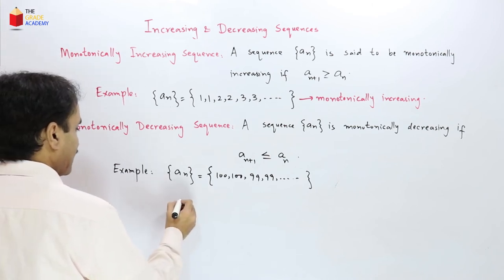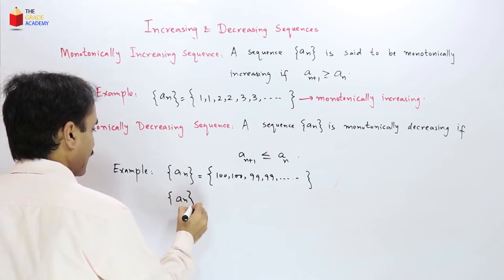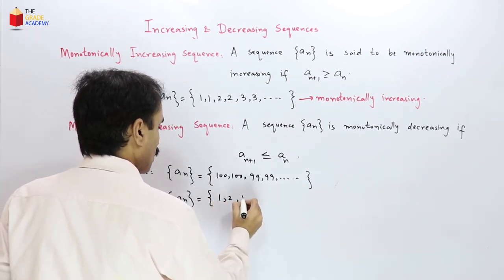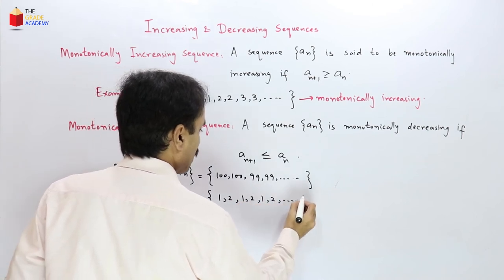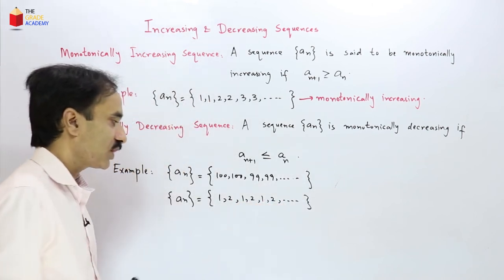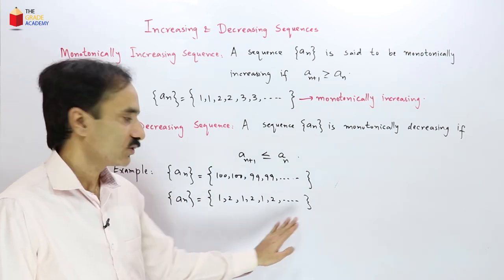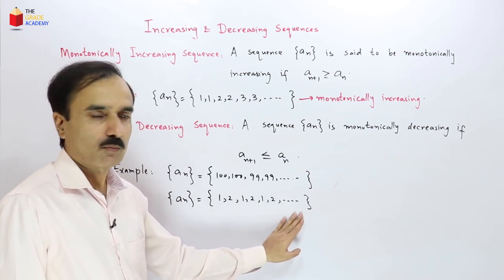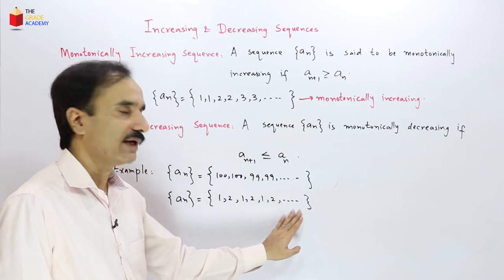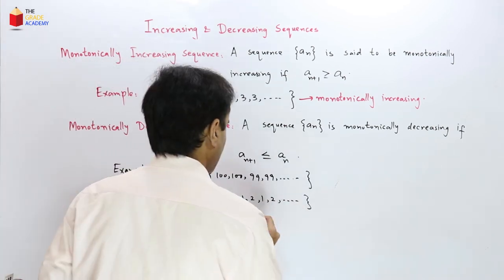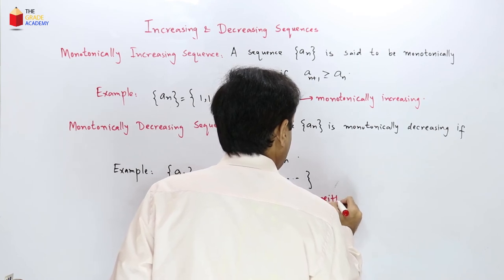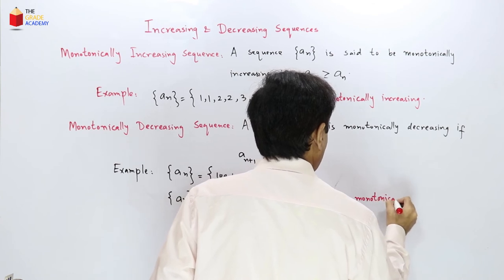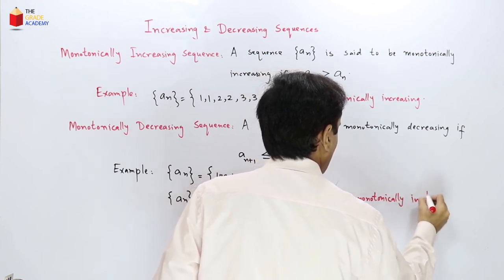Now consider the sequence 1, 2, 1, 2, 1, 2, and so on. What type of sequence is this? This sequence is neither monotonically increasing nor monotonically decreasing.